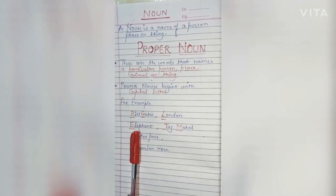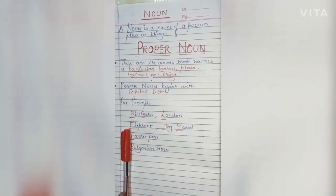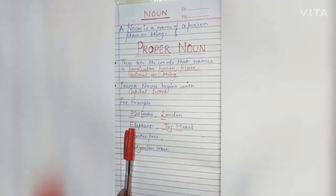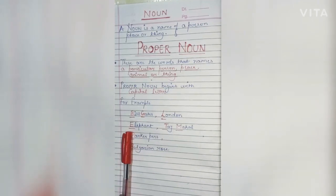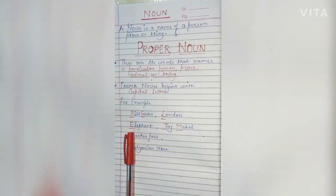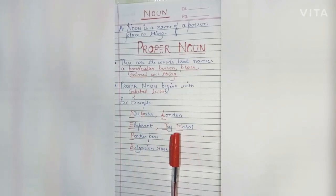Next is elephant. We are talking about a specific animal — we are not talking about any animal like lion, giraffe, or tiger — but we know which animal we are referring to, that is elephant. So it is written with a capital E.